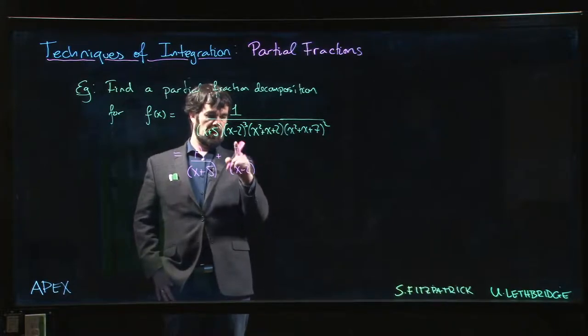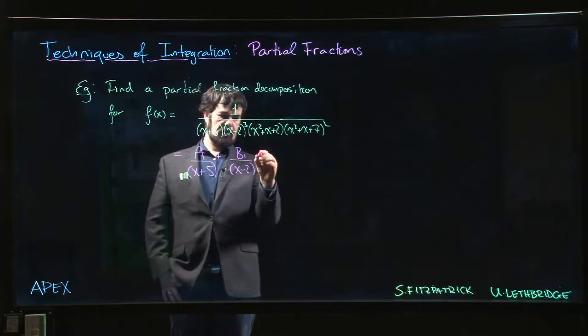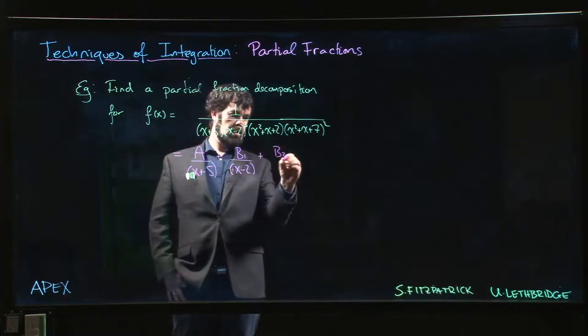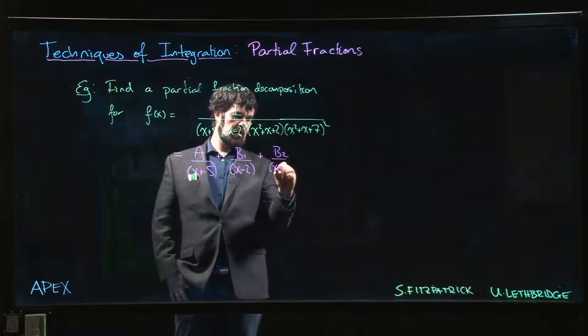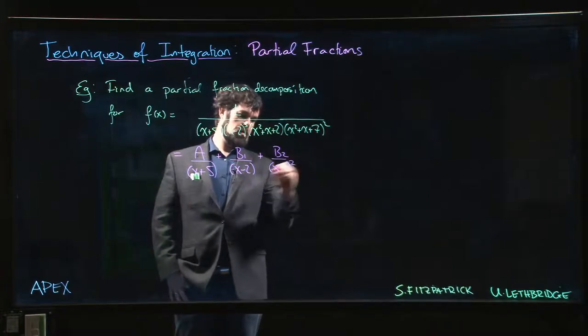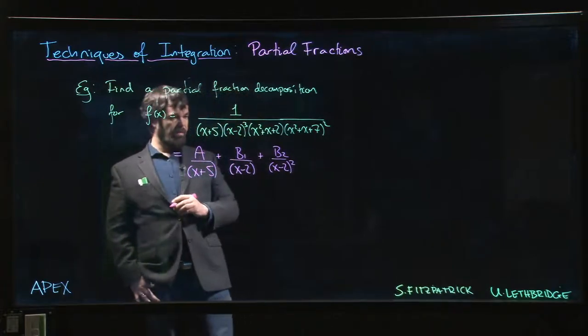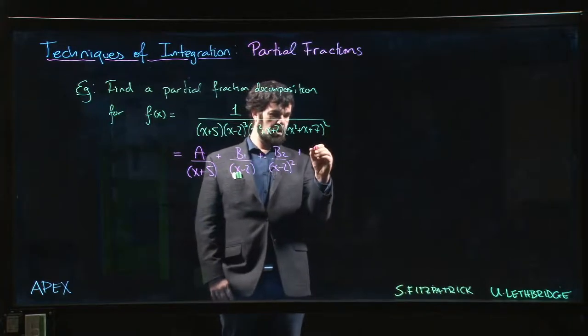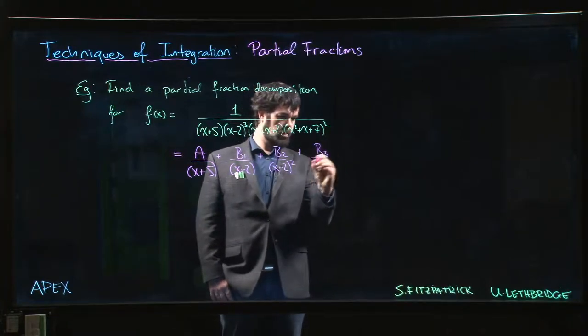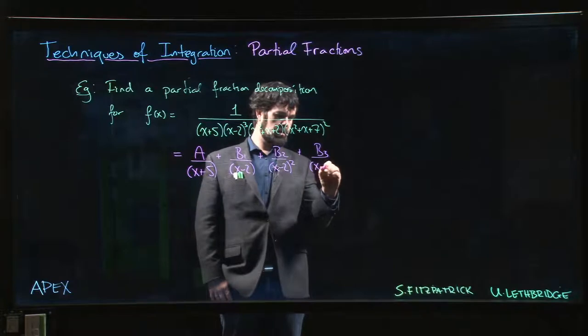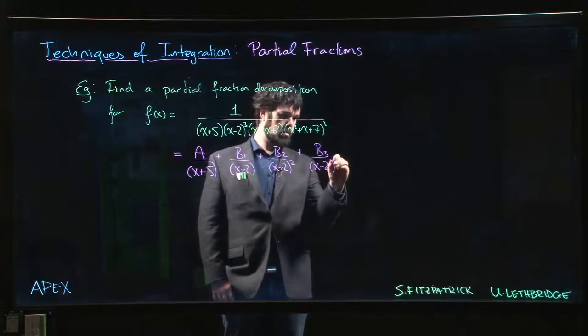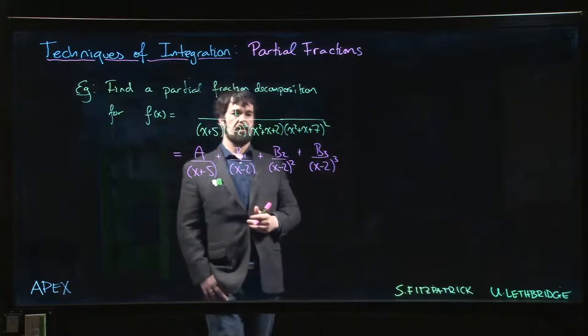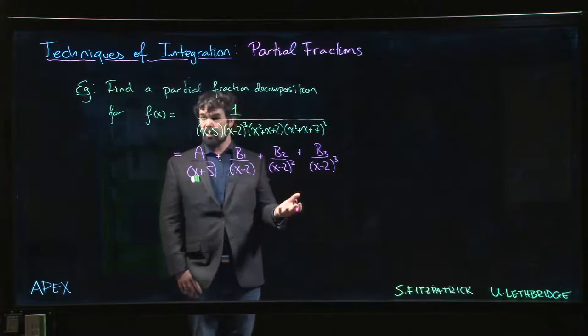Now this next one, because it's repeated, we actually get three terms. We get one for the factor itself, one corresponding to the square of the factor, and one corresponding to the cube. So we get three terms that look like that.